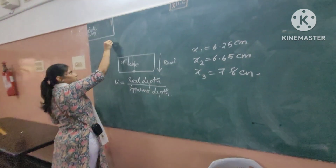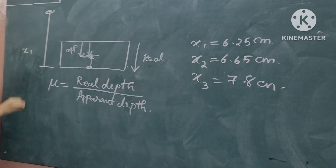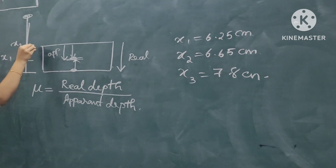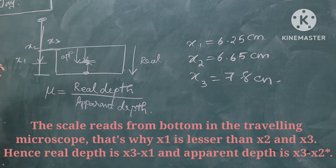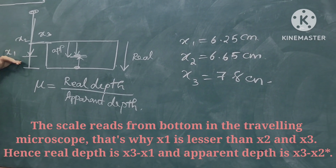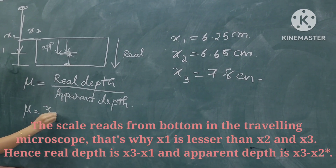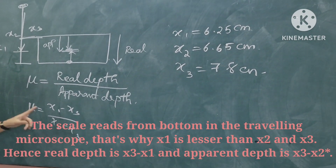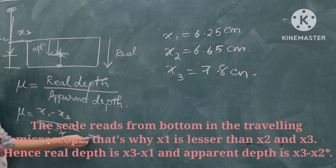What is X1? For example, you have the eyepiece — this reading is X1. This reading is X2, and this reading is X3. Can you tell me what is the real depth? X1 minus X3. What is the apparent depth? X2 minus X3. So the equation will be X1 minus X3 divided by X2 minus X3. Once you do this, you will get the value of the refractive index.